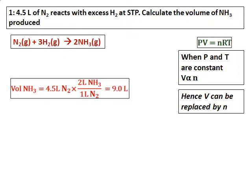We have done such stoichiometry problems before. In this case, if you look at the gas law equation PV = nRT, everything is constant — pressure is not changing, temperature is not changing, and R is always a constant. So the only thing which is changing is the volume. Therefore, volume is directly proportional to the number of moles.